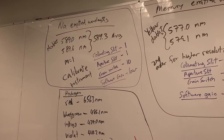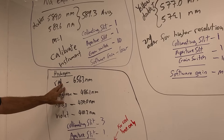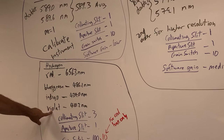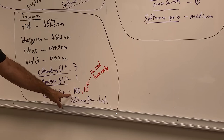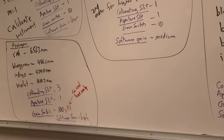Then instead of having sodium vapor, we'll put in hydrogen gas — just change out the tubes. Hydrogen has specific wavelengths because its energy levels and atomic structure are different. We'll see a red, blue, green, indigo, and violet line with specific wavelengths given in nanometers. The settings will be: collimating slit at three, aperture slit at one. The electronic gain switch will be at 100 for all lines except the red, which will use a gain switch of 10. The software gain will be on the high setting.